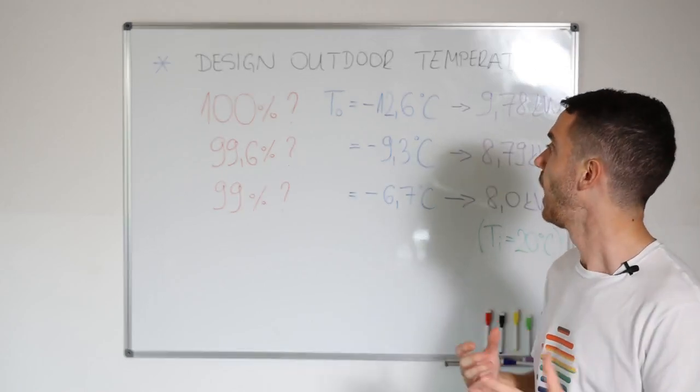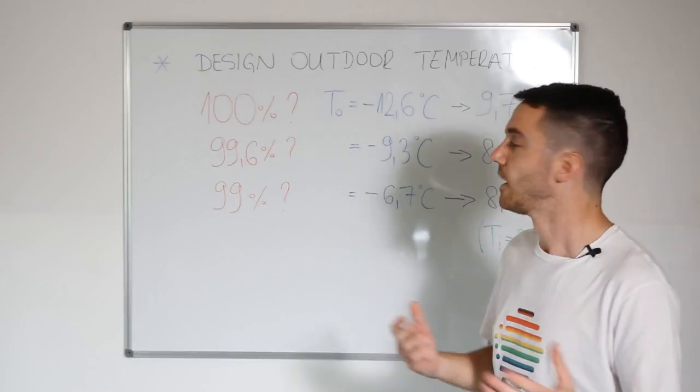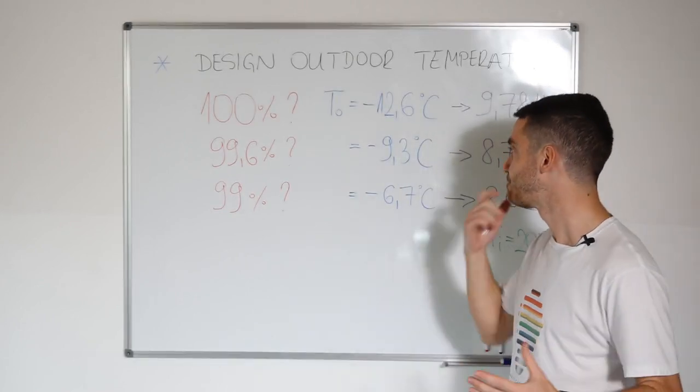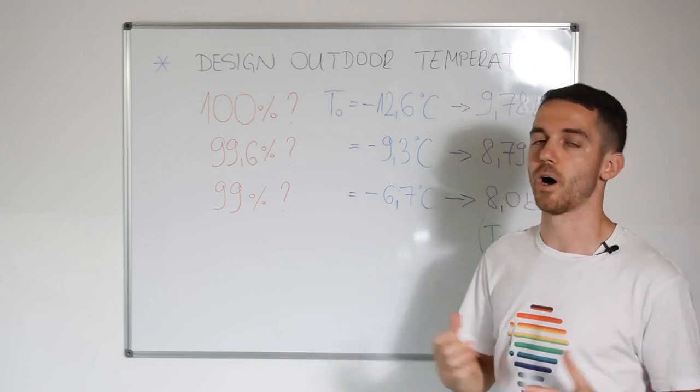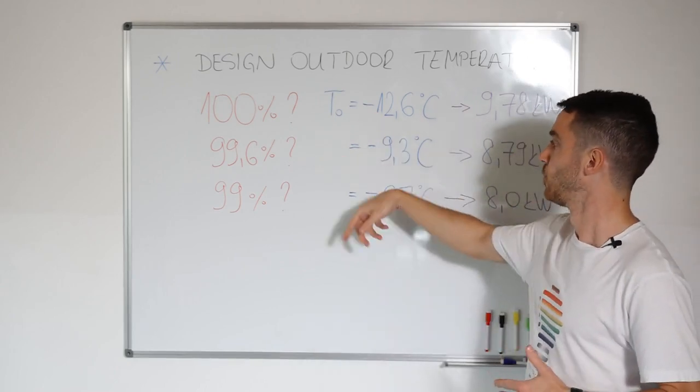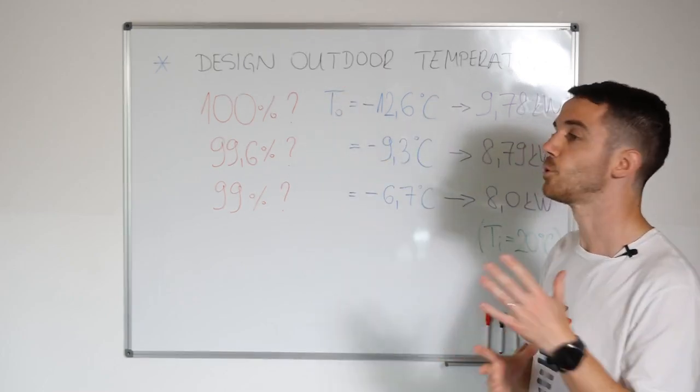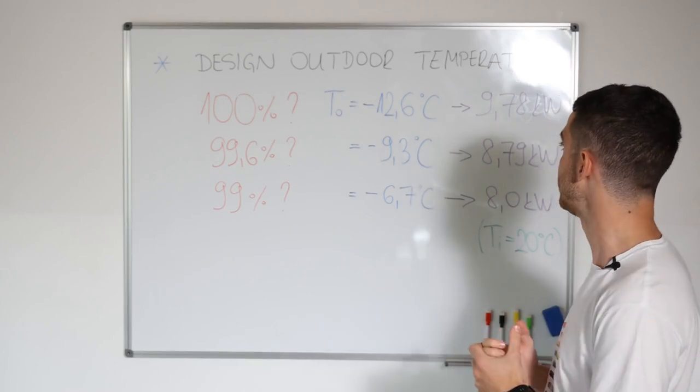For me, I will always choose somewhere between 99% and 99.6%. I live in Zagreb, so I know that probably a few hours per year will be minus 10. And if you choose a specific value, then you need to calculate heat loss. So let's see the differences.